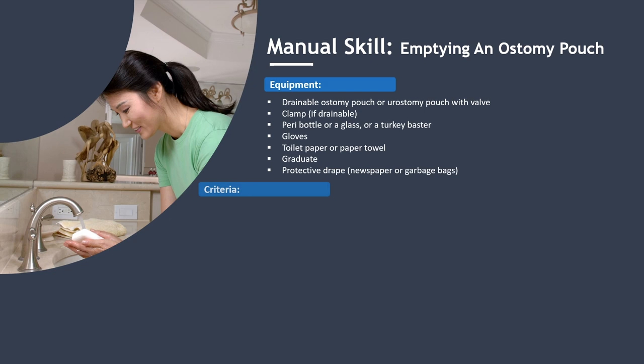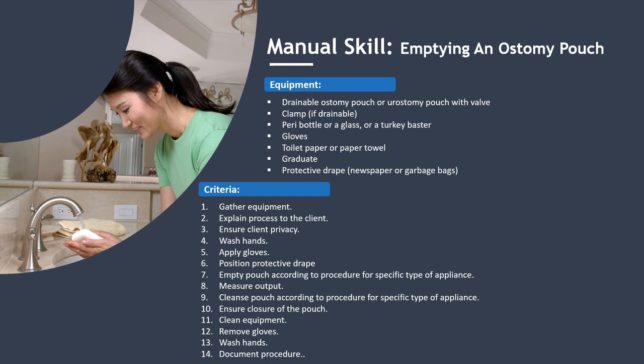Manual Skill: Emptying an Ostomy Pouch. Equipment: drainable ostomy pouch or urostomy pouch with valve, clamp if drainable, peri bottle or glass or turkey baster, gloves, toilet paper or paper towel, graduate, and protective drape. Criteria: gather equipment; explain process to the client; ensure client privacy; wash hands; apply gloves; position protective drape; empty pouch according to procedure for specific type of appliance; measure the output; cleanse the pouch according to procedure for specific type; ensure closure of the pouch; clean equipment; remove gloves; wash hands; and document the procedure.